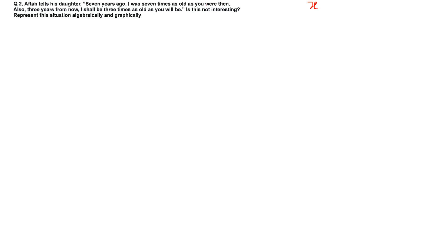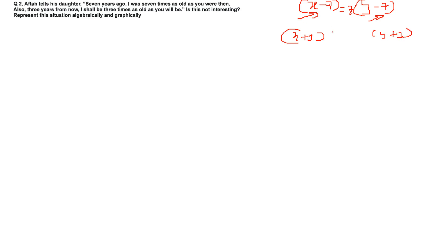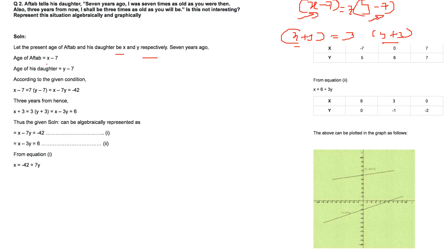The next problem: Aftab tells his daughter, '7 years ago I was 7 times as old as you were then.' Let X be Aftab's current age and Y be his daughter's current age. Seven years ago their ages were X − 7 and Y − 7. So the equation is X − 7 = 7(Y − 7). Three years from now: X + 3 = 3(Y + 3). These are our two equations.